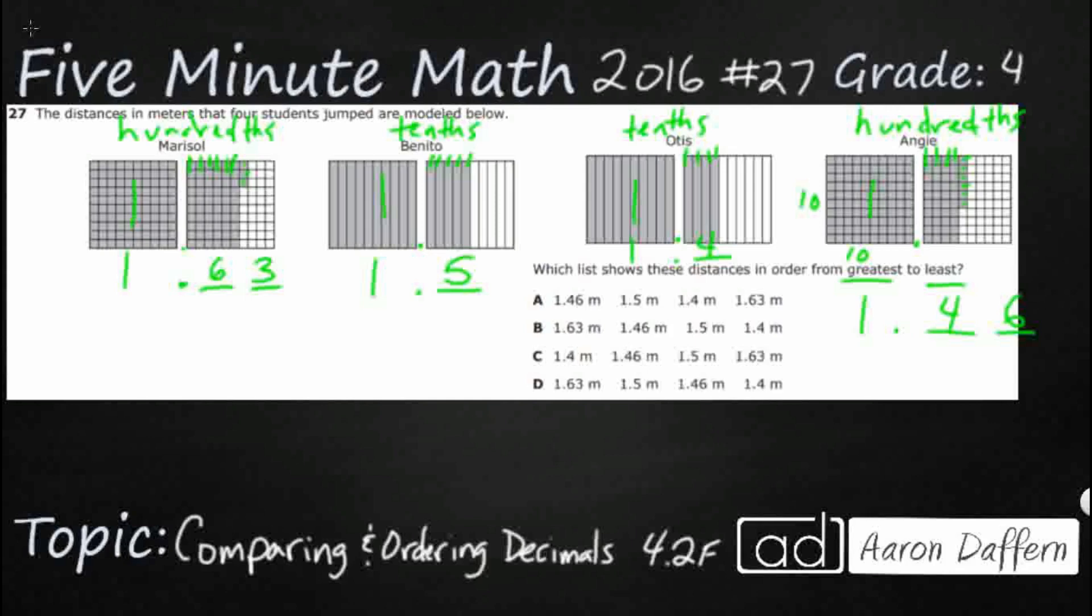Now, how do we put these in order from greatest to least? Well, let's just go ahead and stack them all up underneath Marisol here. And what I'm going to do is I am just going to line them up with the decimals. It doesn't matter if they don't all go to the same spot initially. Where you always line them up is with the decimal point. So, I'm going to grab Benito. I'm going to put them right here. This is going to be one point five. Otis is one point four. And then Angie is one point four six.